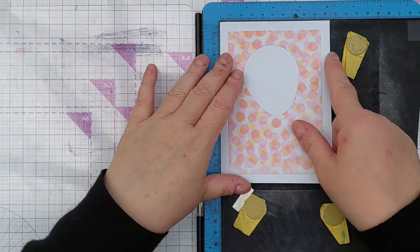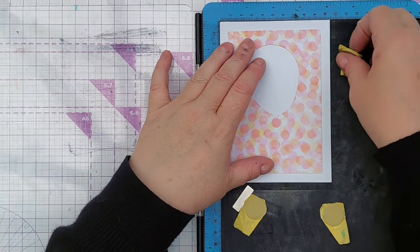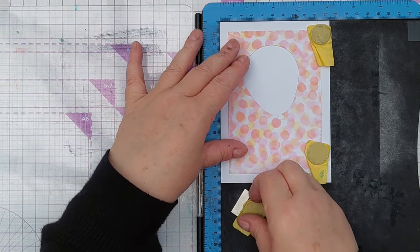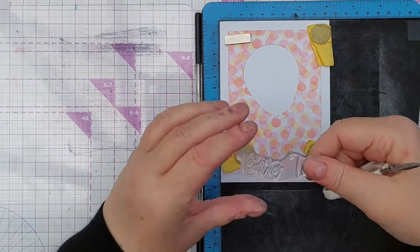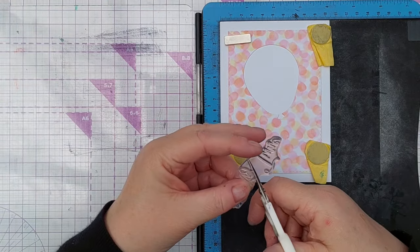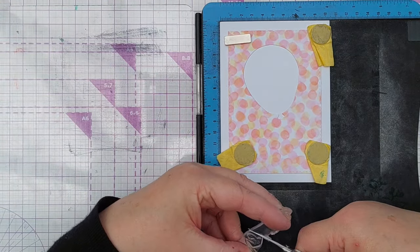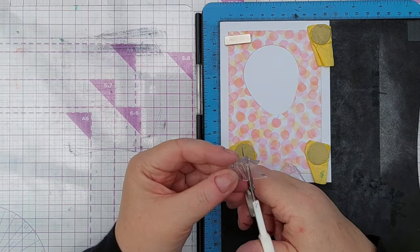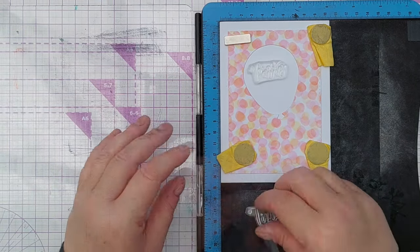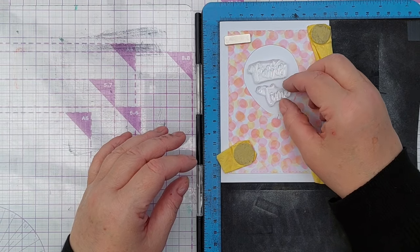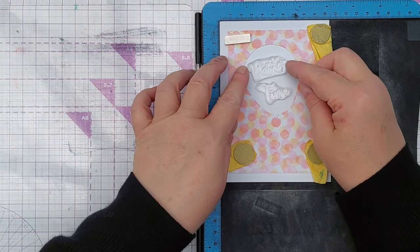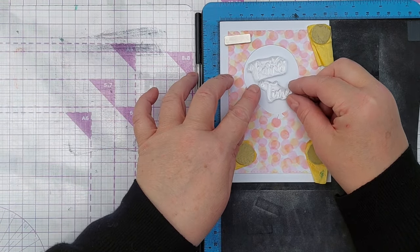And the last one I'm going to stamp inside is this balloon one on the stencil background. And I'm going to use this stamp. It's a photopolymer one and it says party time. I've separated the words just with a pair of scissors because I don't need them joined together particularly.